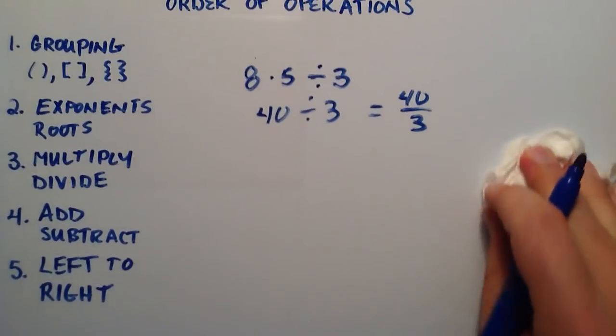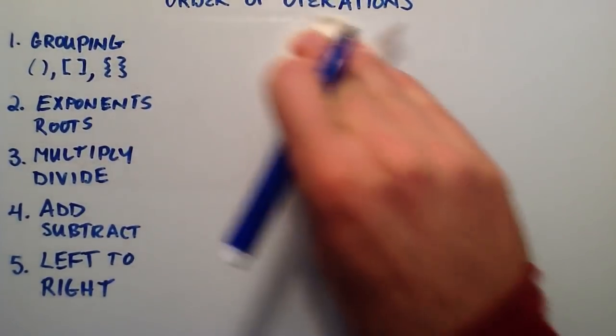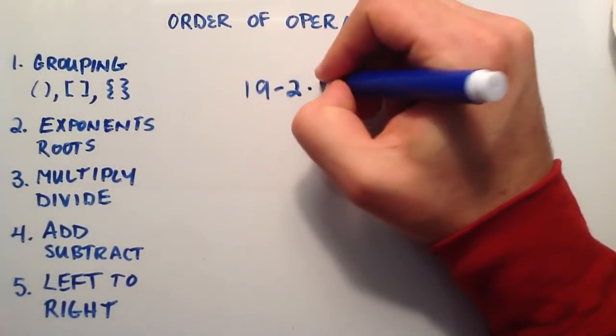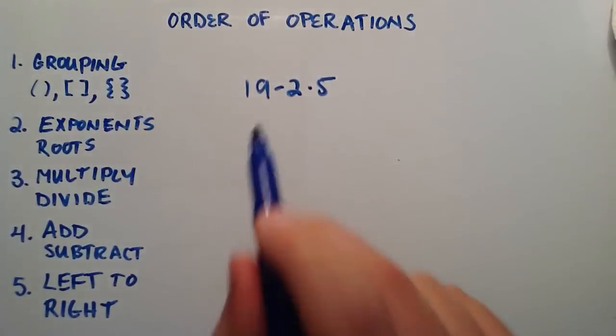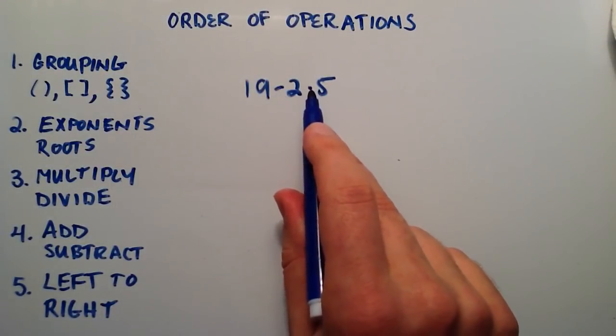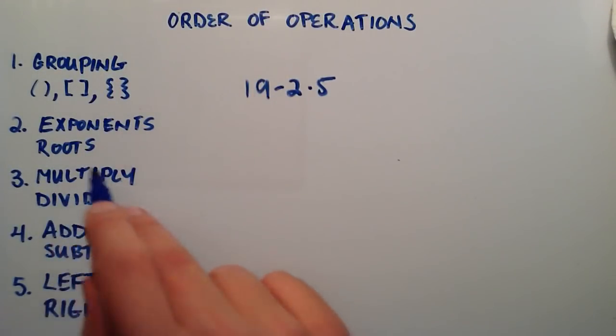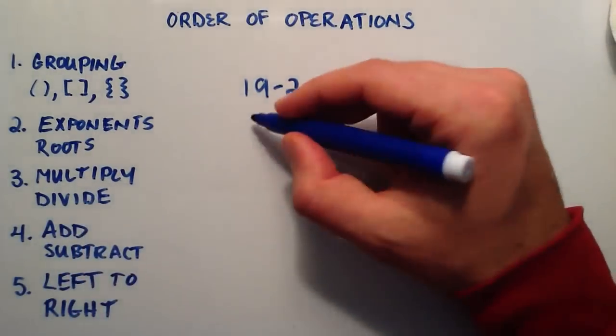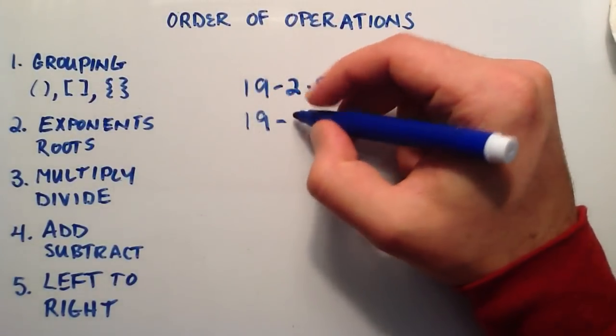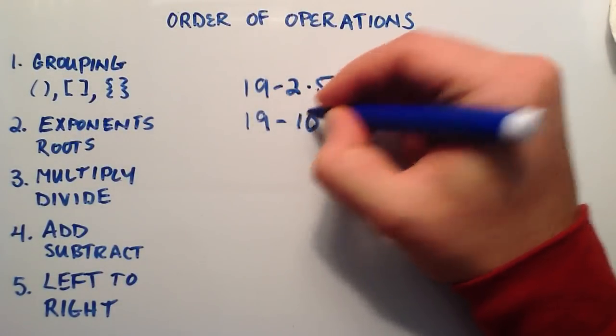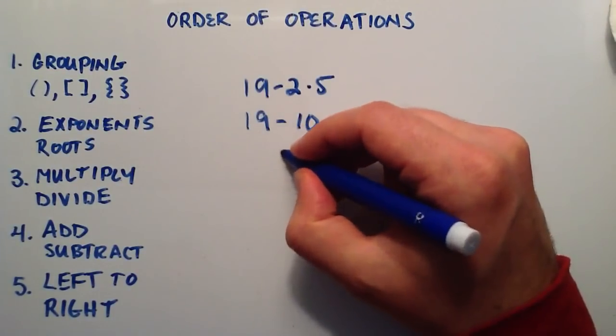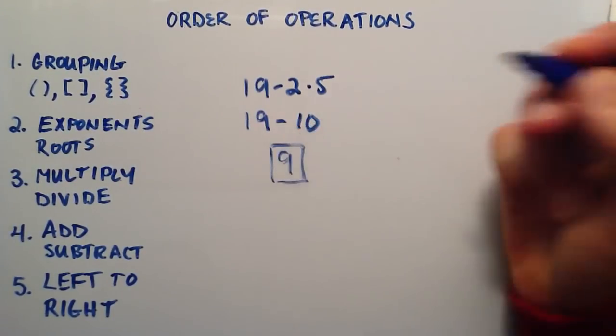So let's do a couple examples here. Let's say that we have 19 minus 2 times 5. We have a subtraction, we have a multiplication. So multiplication and division comes before addition and subtraction, so we do the multiplication first. So this becomes 19 minus 2 times 5, and 2 times 5 is equal to 10. So now we have 19 minus 10, which is simply 9.